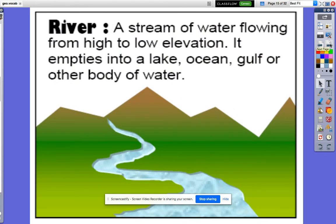A river. A river is a stream of water flowing from high to low elevation. It empties into a lake, ocean, gulf, or other body of water. A stream of flowing water.